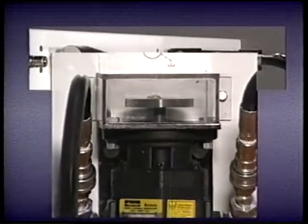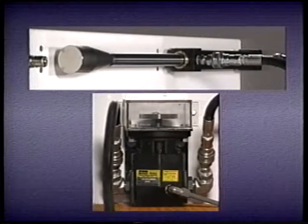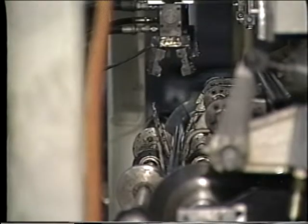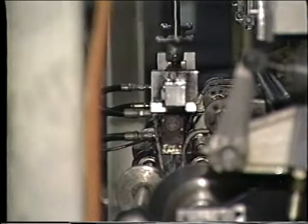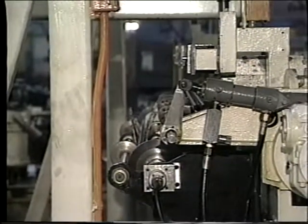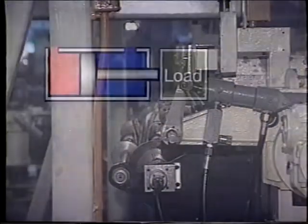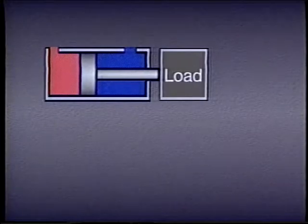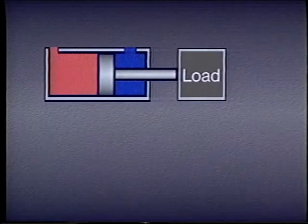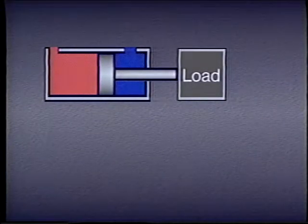In this lesson, we'll examine these basic principles and see how they apply to the operation of all actuators. Let's begin with linear or straight-line actuators. The most common type of linear actuator is the cylinder. We learned in an earlier lesson that when fluid pressure is applied to the piston face, it generates a mechanical force which moves the piston rod and the load in a straight line.